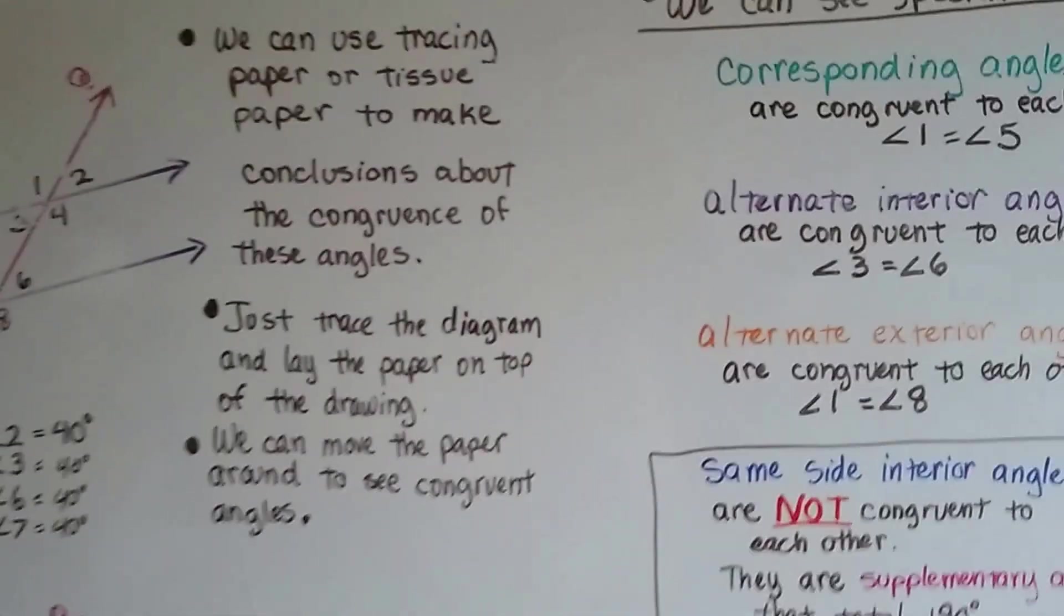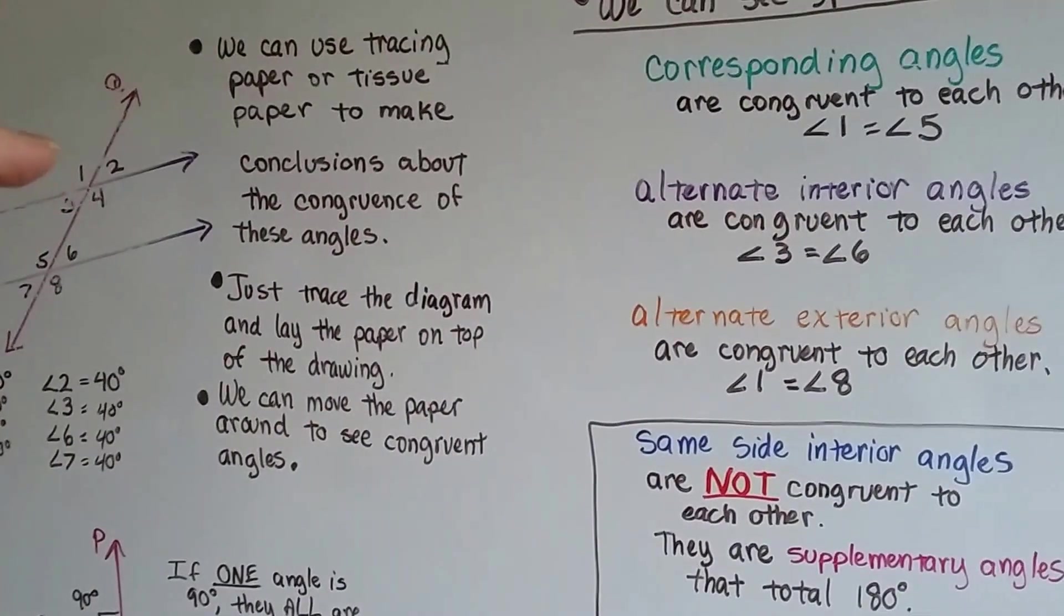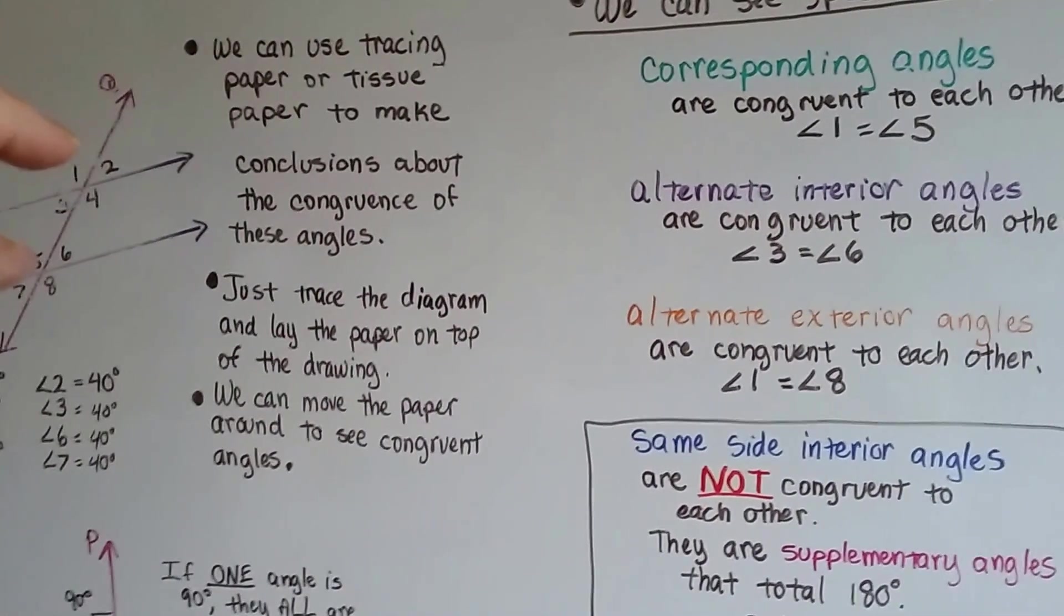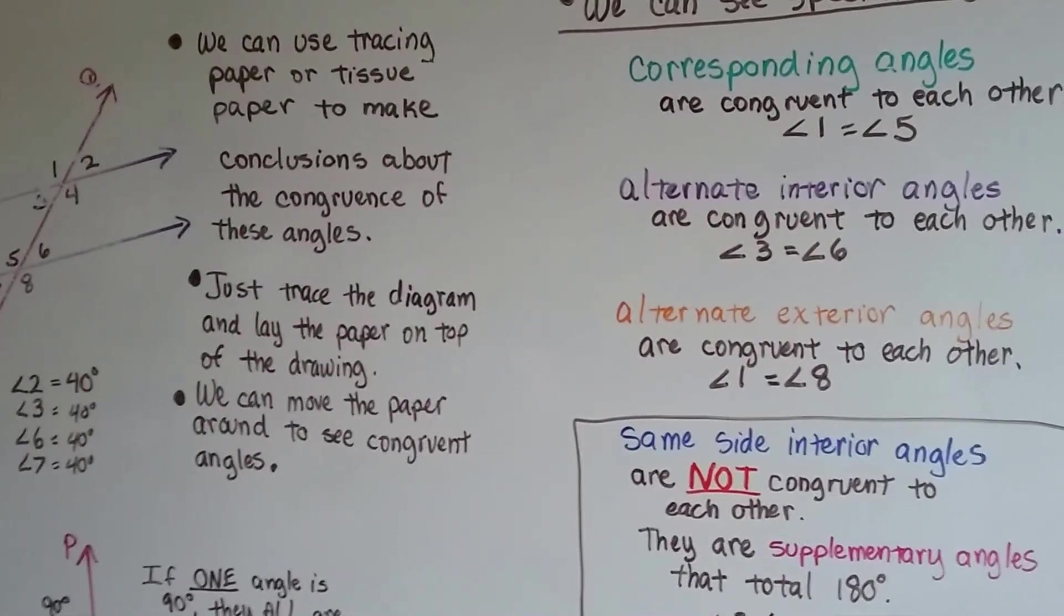Well, we can see special angle pairs. We can see corresponding angles like angles 1 and angle 5. Angles 1 and angle 5. They're the same measure. They're congruent to each other.